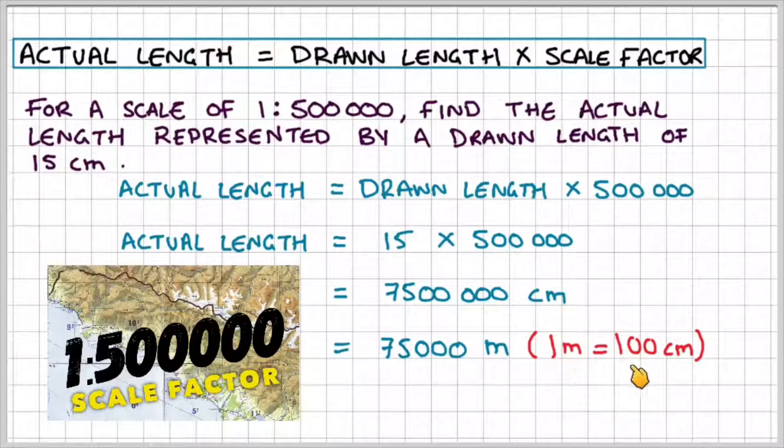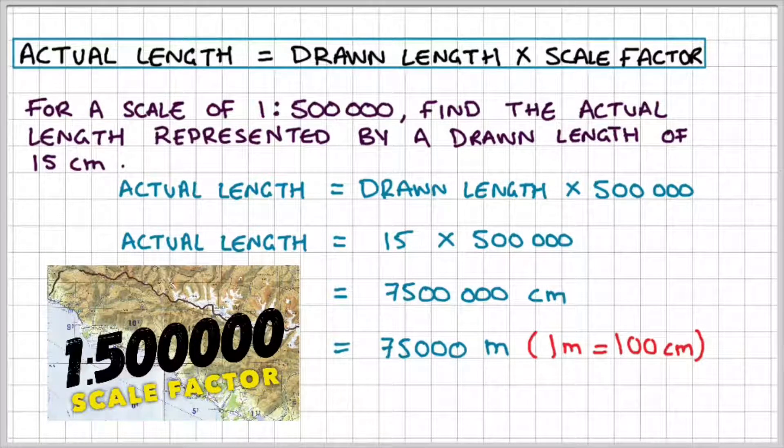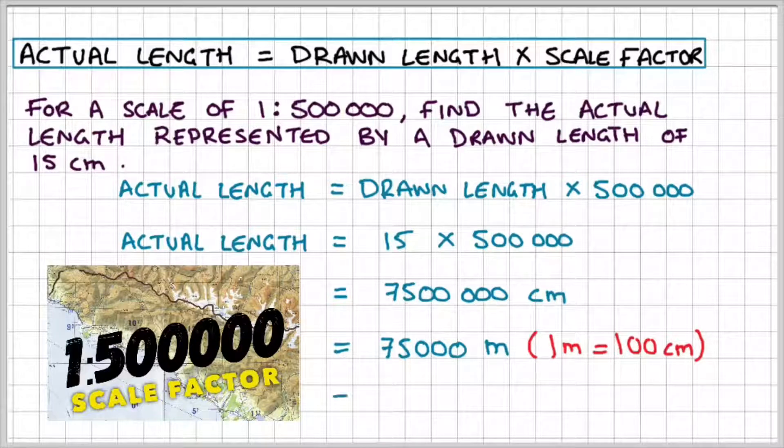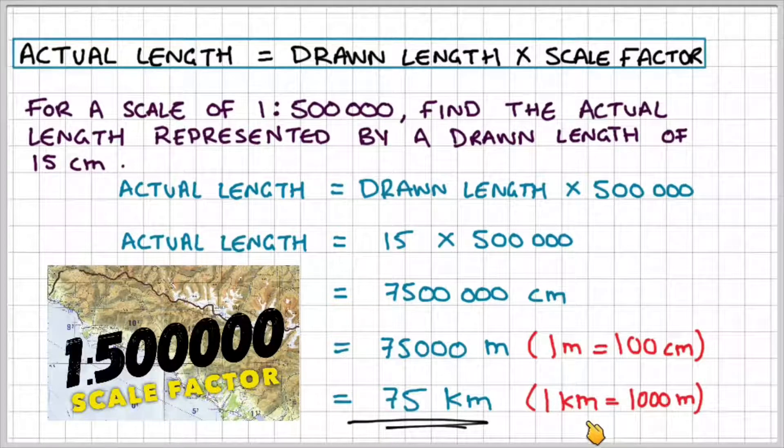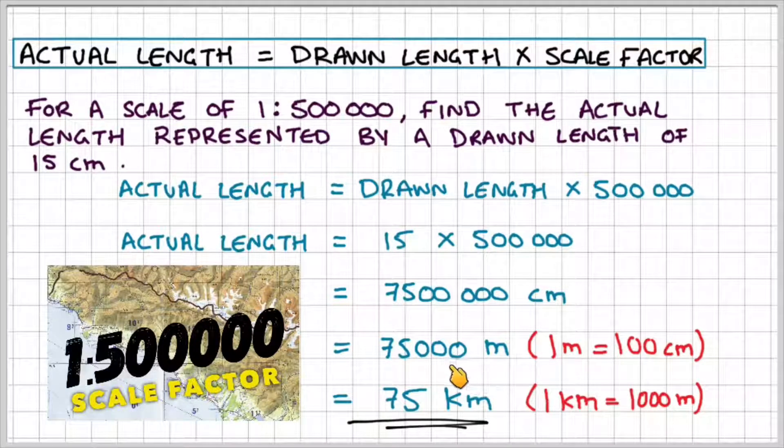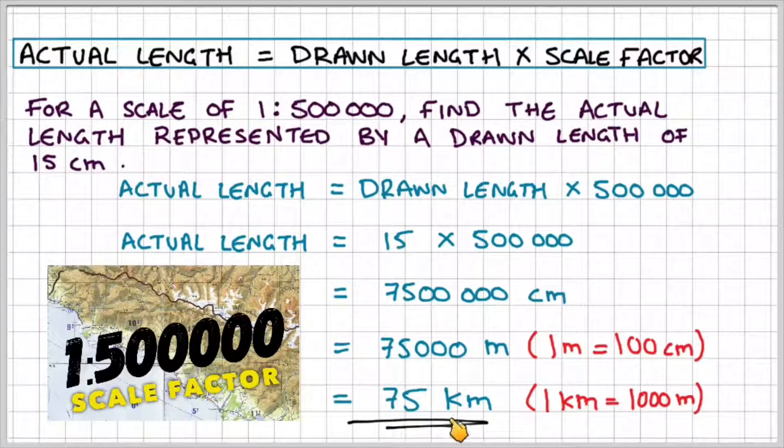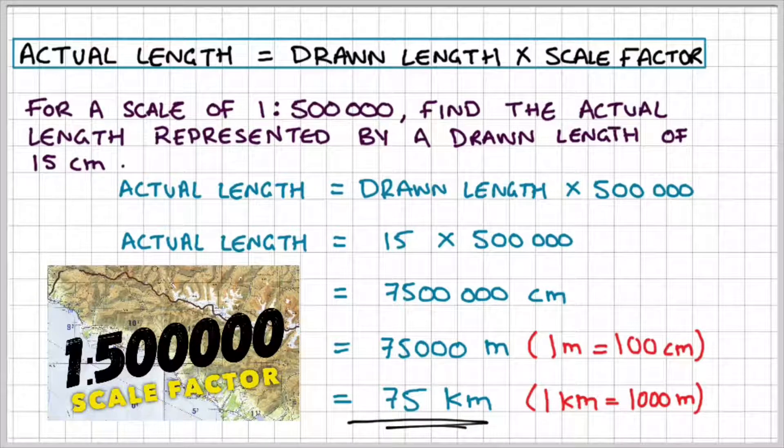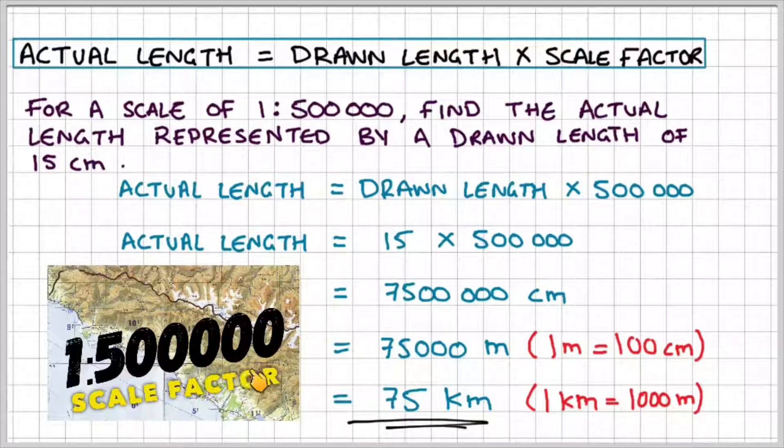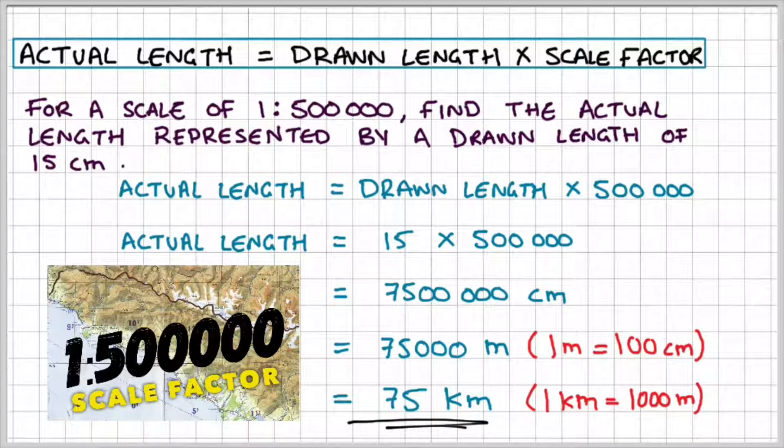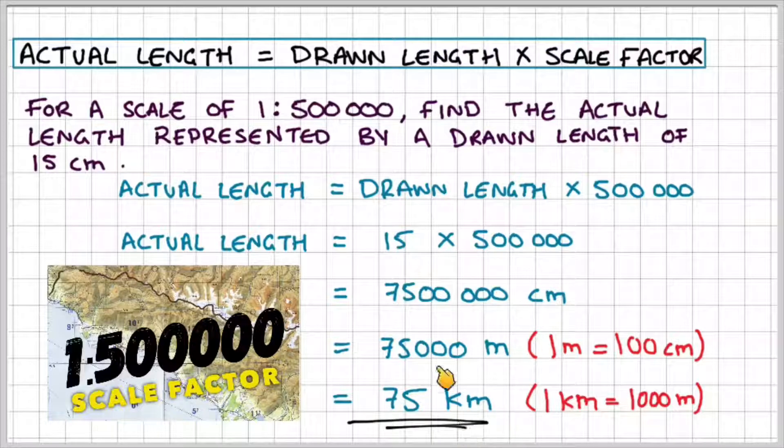Now I know that one meter is equal to 100 centimeters so that would give us 75,000 meters and then I know that one kilometer is equal to a thousand meters so if I divide that by a thousand I would get 75 kilometers. So using a ratio as a scale factor of 1 to 500,000 if we drew 15 centimeters on paper it would represent a length of 75 kilometers in real life.